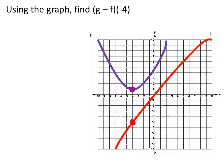We got a point right there. So we're going to take those y values and subtract them. In other words, I have g of negative 4 minus f of negative 4.